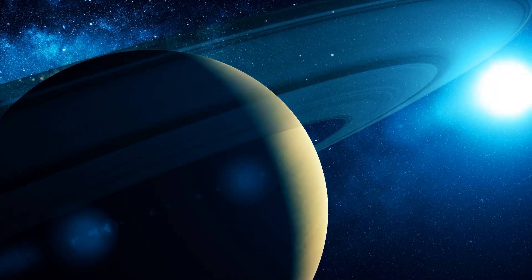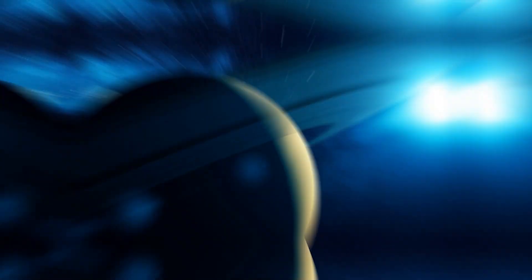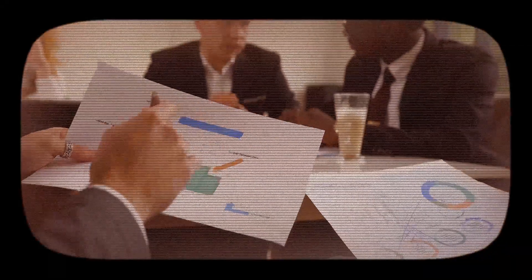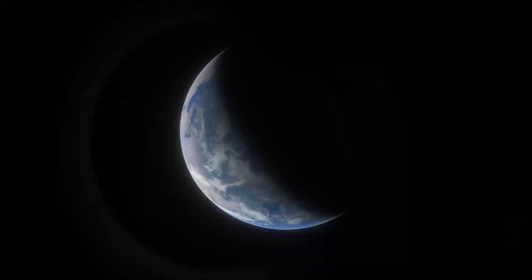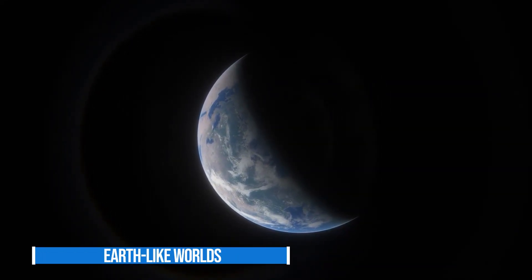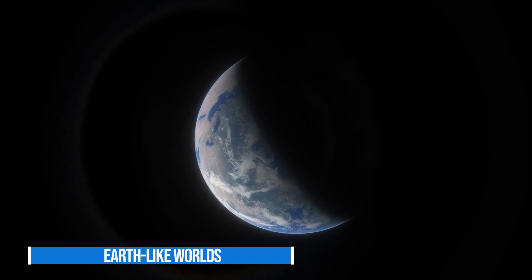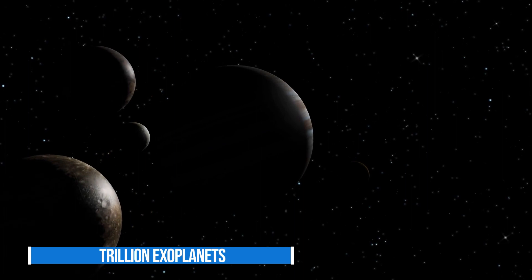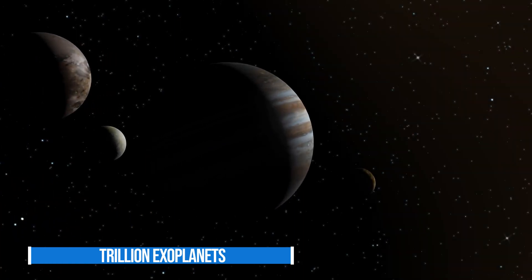This observation reveals that Webb has the capability to characterize the atmospheres of exoplanets, including those of potentially habitable worlds, in the greatest amount of detail possible. The scientists working on the Webb Space Telescope intend to also direct the powerful instrument at potentially Earth-like worlds that are smaller and more rocky. There could be well over a trillion exoplanets in our galaxy alone, but we know ravishingly little about them.